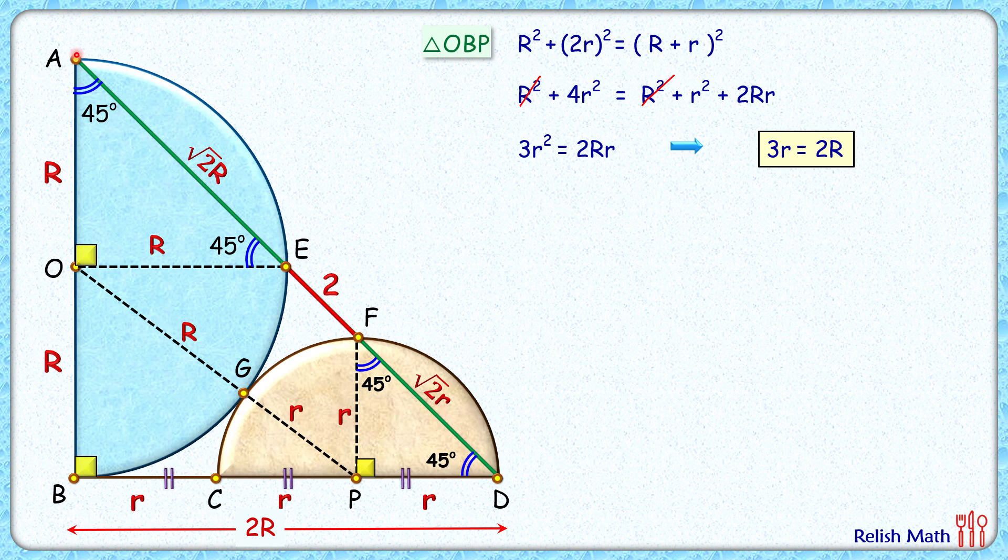Now in this big triangle ABD, in this big right angle triangle, applying Pythagoras theorem, we'll get (2R)² + (3r)² = (√2R + 2 + √2r)².